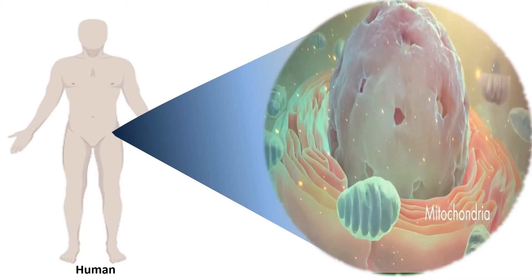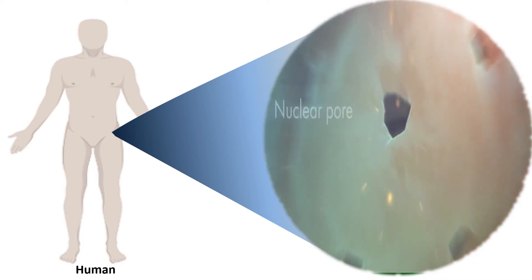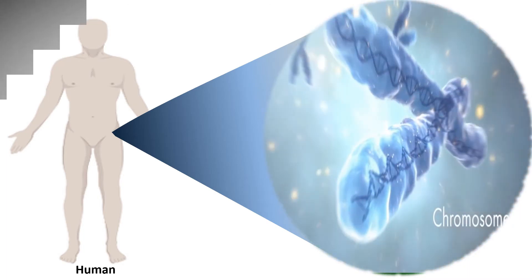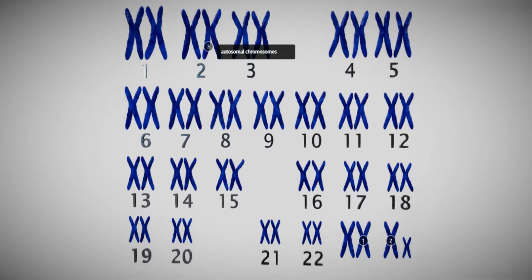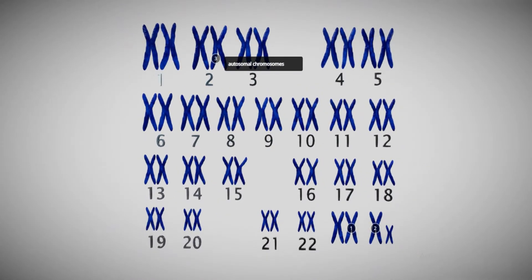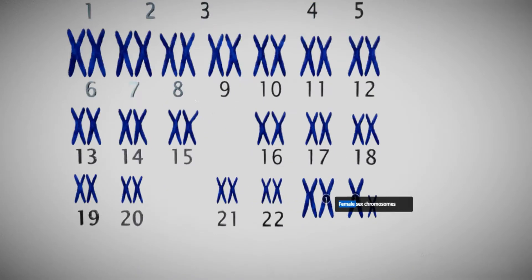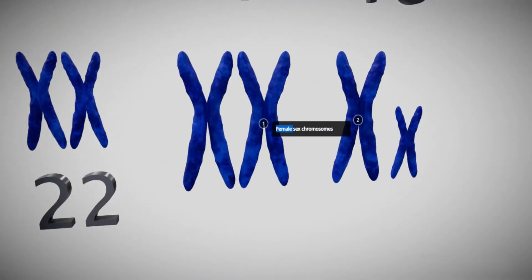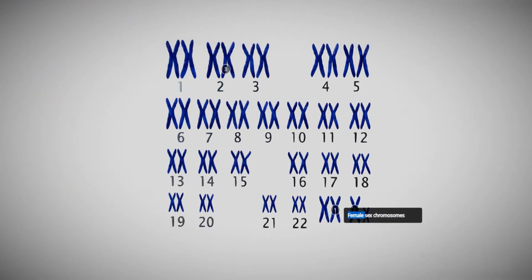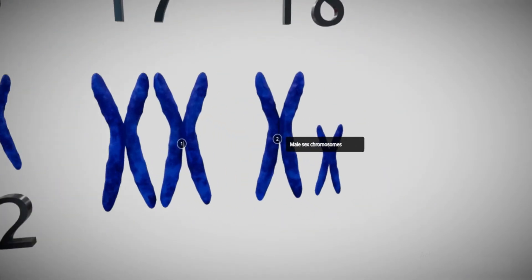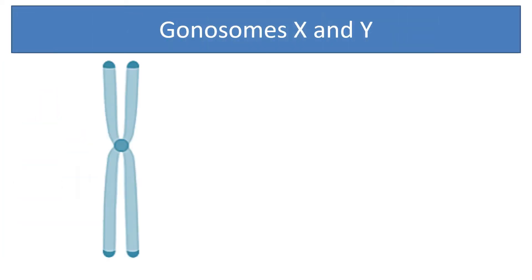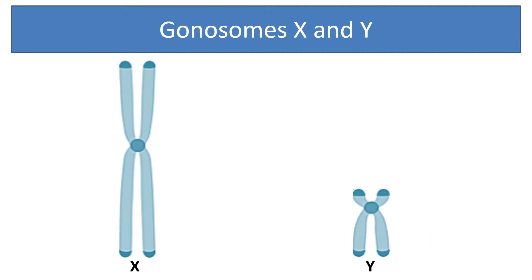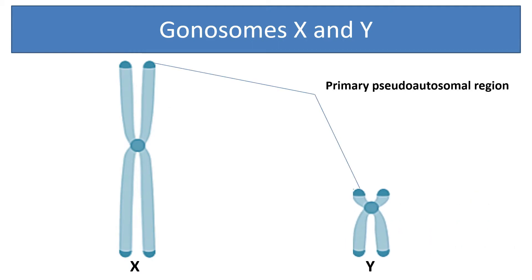Human nucleated cells contain 46 chromosomes: 44 non-sex chromosomes or autosomes, numbered from 1 to 22, and 2 sex chromosomes or gonosomes. In females, the two gonosomes are X and X, while in males they are X and Y. Gonosomes X and Y share homologous regions at their tips called primary and secondary pseudoautosomal regions.